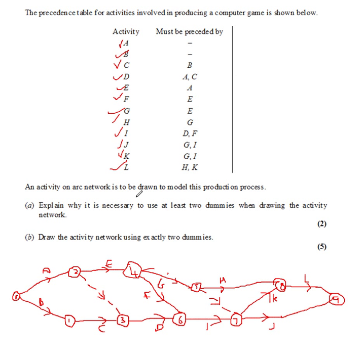Okay, so in answering that question for part A, explain why it's necessary to use at least two dummies when drawing the activity network. The reason we need two dummies is because D depends on A and C, whereas E only depends on A. So these two bits cause a problem where we need a dummy. And the second dummy is needed because H depends on G,